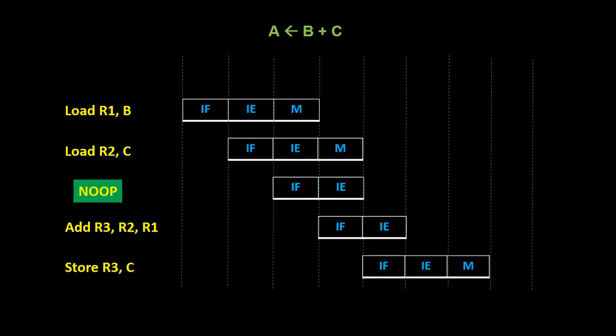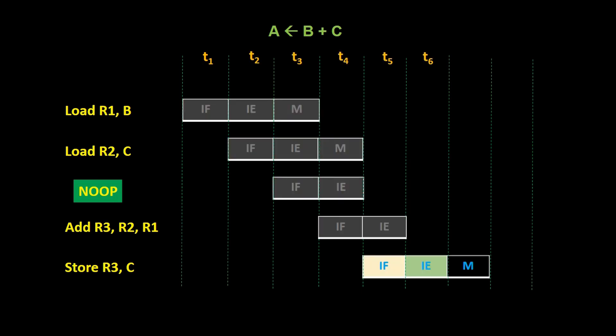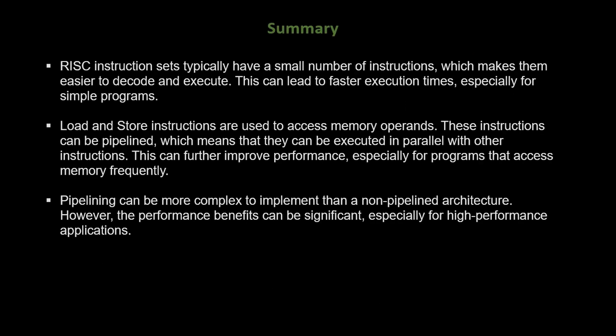This equalizes the duration of all stages and improves execution speed. In scenarios where the execution stage itself is longer, such as with ALU operations, the instruction execute stage can be divided into two parts: IE1 for register reading and IE2 for ALU operation. In summary, RISC instruction sets offer simplicity, fixed size, and register-based operations. Load and store instructions enable access to memory operands. Pipelining in RISC architectures enhances execution speed by overlapping instruction stages. Understanding RISC instruction sets and pipelining is crucial for designing efficient processors and optimizing program execution.